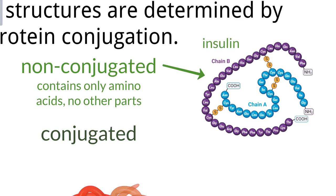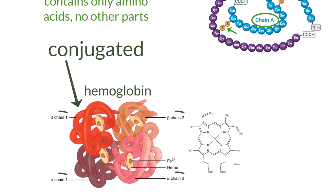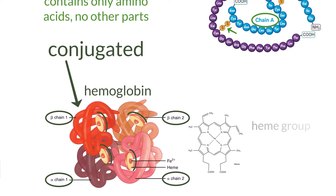Insulin is created by joining two protein chains together via a disulfide bridge, meaning this structure is now quaternary because it has more than one chain. An example of a conjugated protein would be hemoglobin. Hemoglobin is a quaternary protein made up of four separate tertiary proteins that are linked together. Each of the tertiary proteins contains a heme group, which are not amino acids — you can see the structure here — making it a conjugated protein.